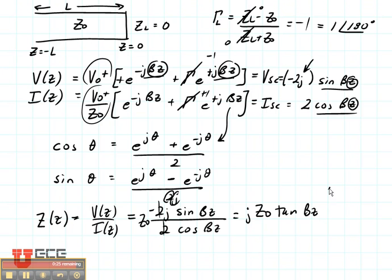If I were considering the input to the line, I would put an L here, rather a minus L, and that's how I end up getting rid of this minus sign right here, by putting in a minus L here and a minus L there. A very important consideration is that this impedance is strictly reactive and there is no real part.